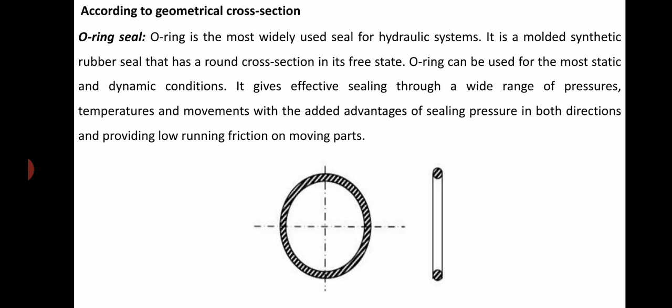According to geometrical cross-section: O-ring seal — the O-ring is the most widely used seal for hydraulic systems. It is a molded synthetic rubber seal that has a round cross-section in its free state. O-rings can be used for most static and dynamic conditions. They give effective sealing through a wide range of pressures, temperatures, and movements, with added advantages of sealing pressure in both directions and providing low running friction on moving parts.